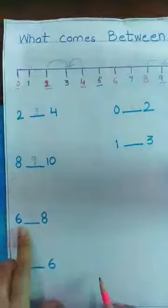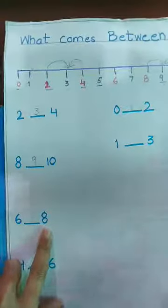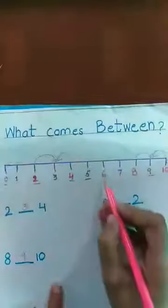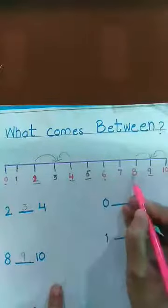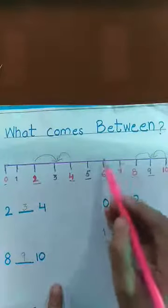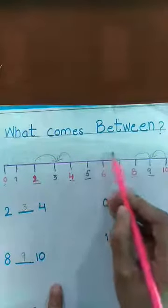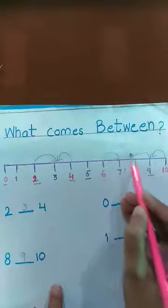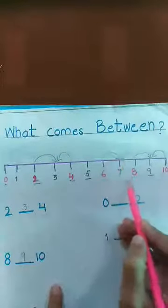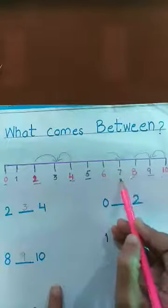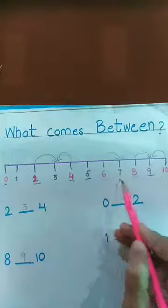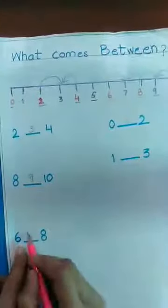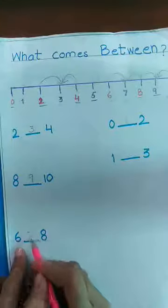Isi tarah yeh hai six and eight. Ab yahan pe dekho — this is six and this is eight. Ab humne dekhna hai ki six or eight ka between koun sa hai? Six or eight ka between koun sa hai? Seven. What comes in between six and eight? Seven.